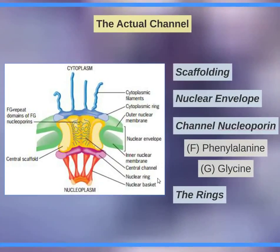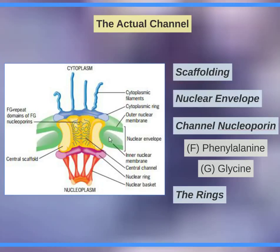When talking about the actual channel, there's something called FG domains — this is something that will be tested. It stands for phenylalanine and glycine, and it is like these little fibers that allow things to pass by. The nuclear envelope is the membrane. There's scaffolding holding the actual channel material, and there are rings. There is a cytoplasmic ring, which has little filaments or hairs that may guide things in, like an air traffic control person.